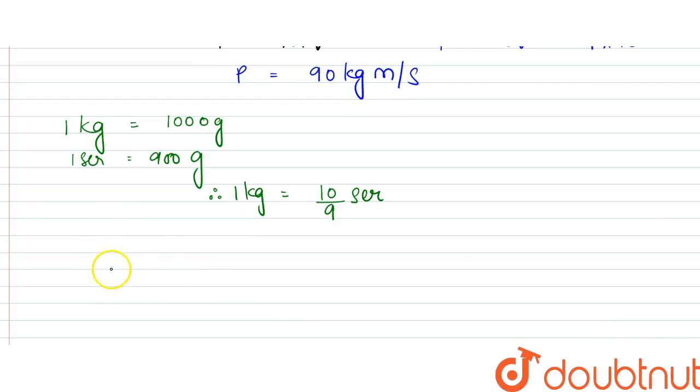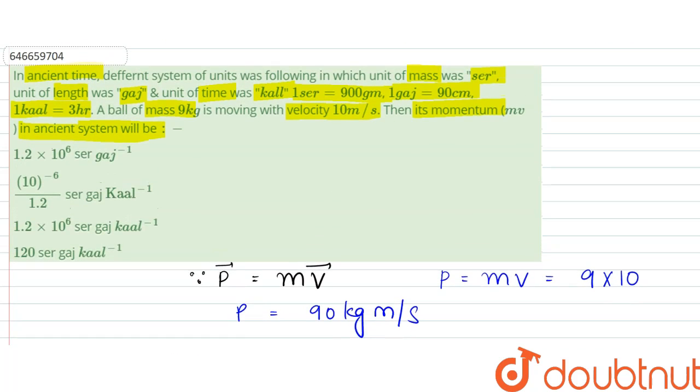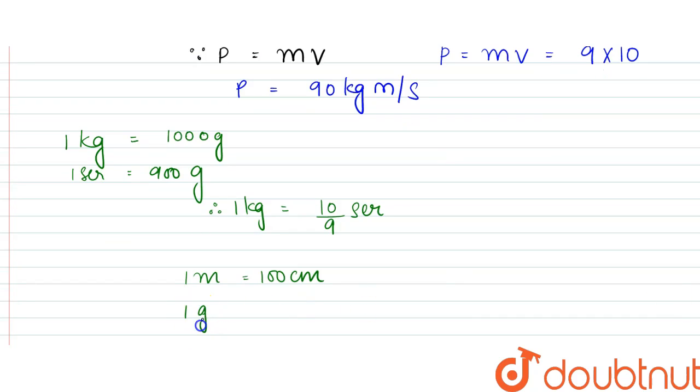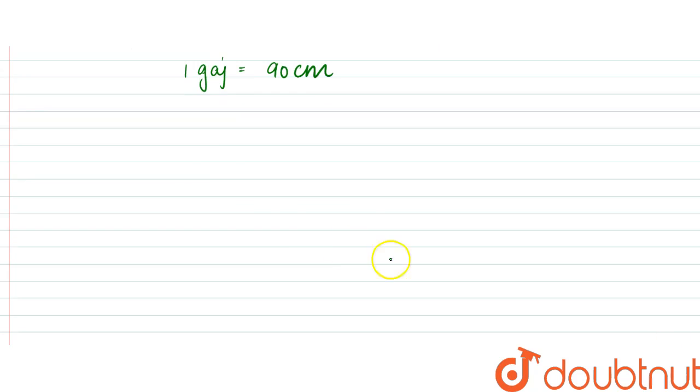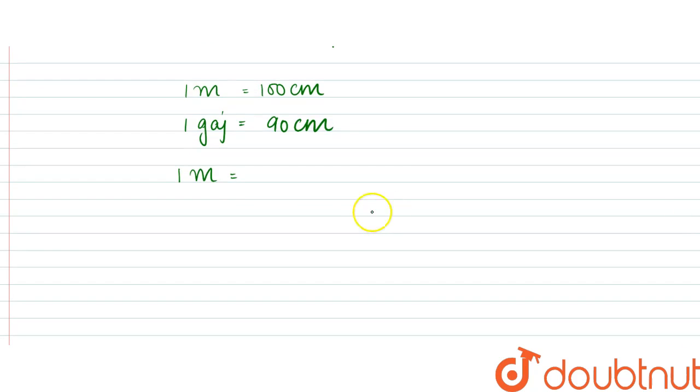Since 1 meter is equal to 100 centimeters, and for length it is given as 1 gauge is equal to 90 centimeters, we can write that 1 meter is equal to 10 by 9 gauge.